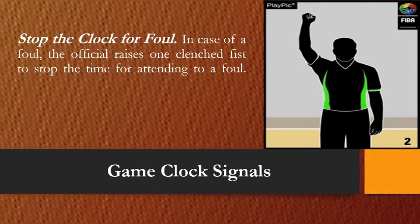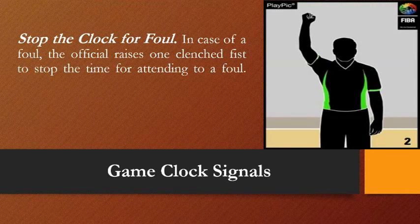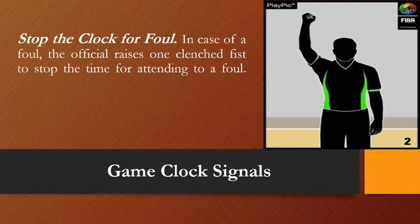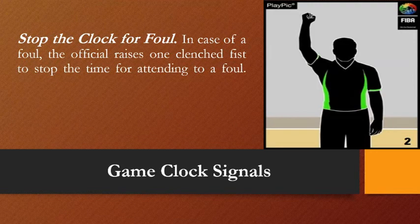Second is stop the clock for foul. In case of a foul, the official raises one clenched fist to stop the time for attending to a foul. So once a player commits any kind of foul — even a tactical foul — the referee must stop the clock for foul using his clenched fist. That is the difference between stop clock and stop the clock for foul.